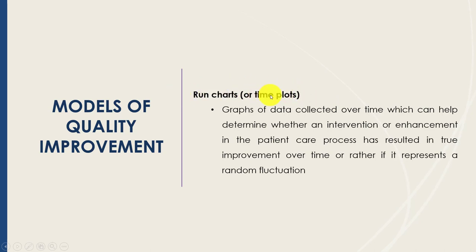Another chart used in quality improvement is the run chart, sometimes called a time plot. These are graphs of data collected over time and help determine whether an intervention has actually caused an improvement in patient care. Without data collected over time, it's often very difficult to know if what we are seeing in our metrics represents random fluctuations or a true trend.